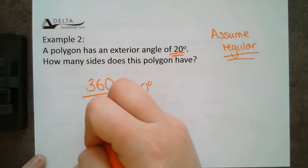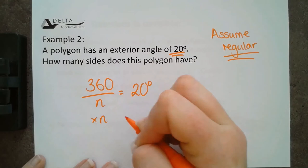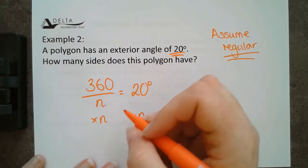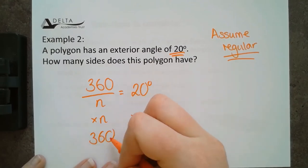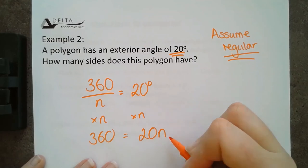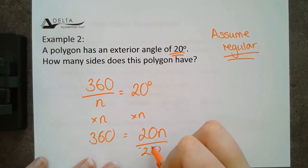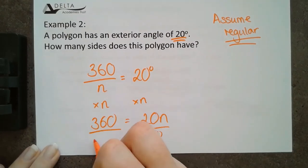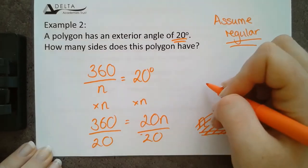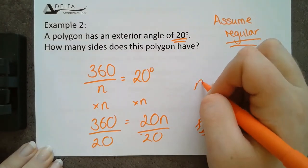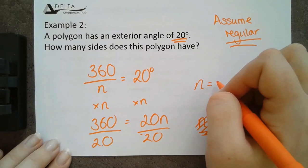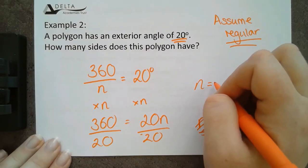To rearrange this, what we're going to do is multiply by N on both sides to get us 360 degrees is equal to 20N. Then divide through by 20. And that's going to get us that N is equal to 18.